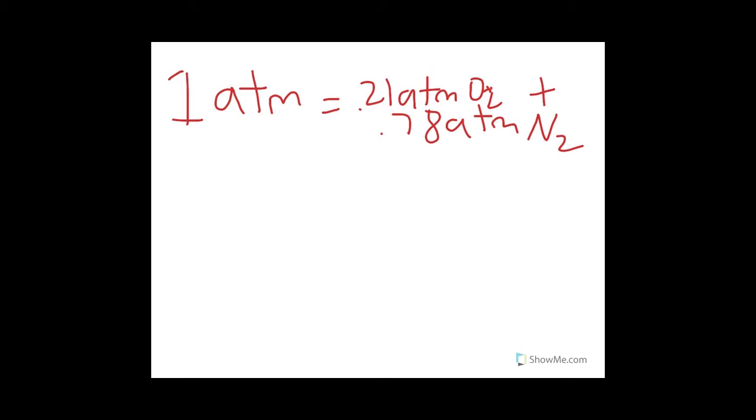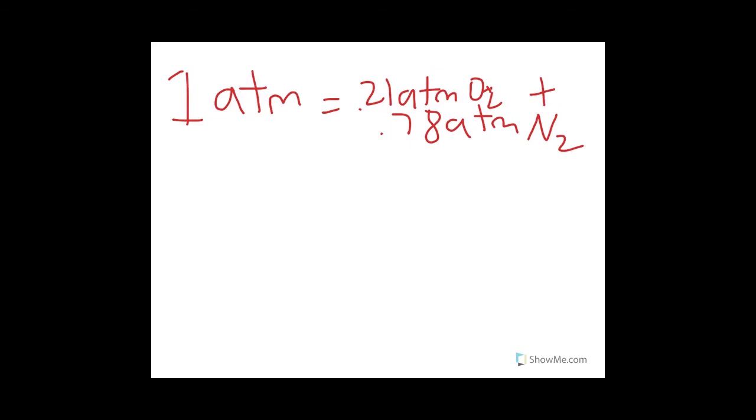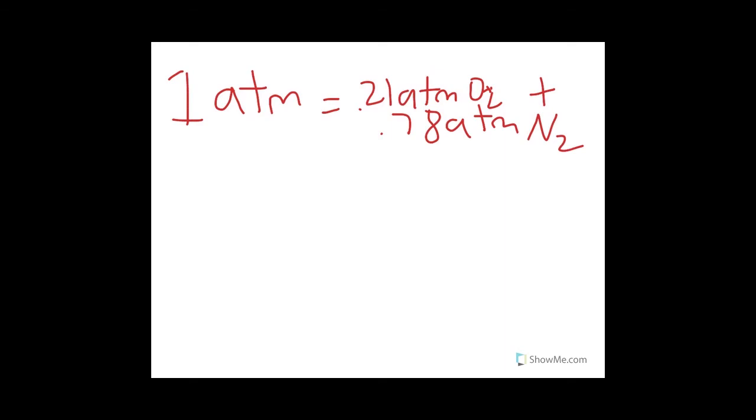...the partial pressures of oxygen and nitrogen will all decrease by the same factor of one-third. This is because the percent of oxygen and nitrogen in the air always remains constant.